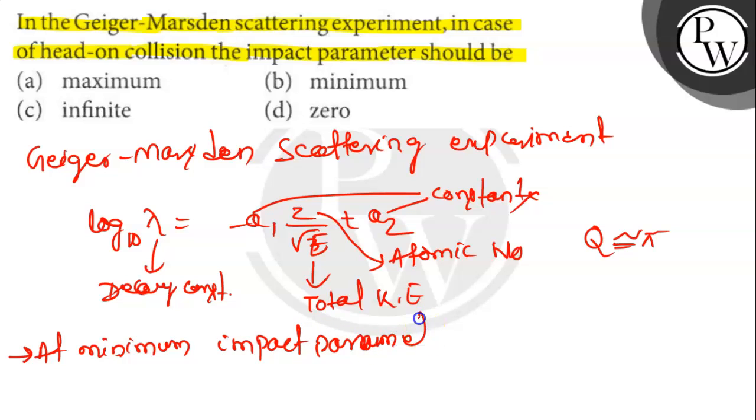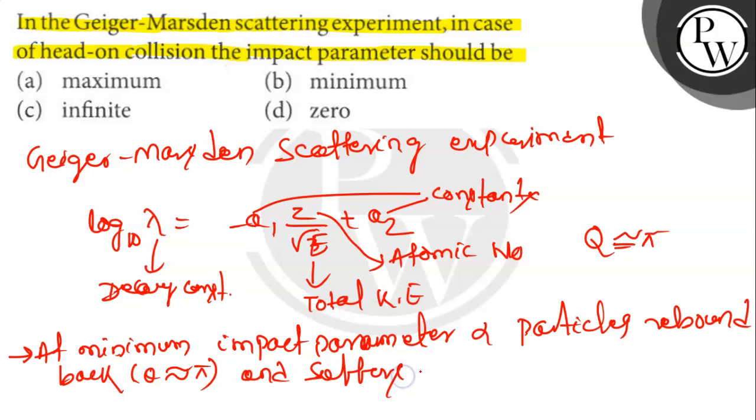alpha particles rebound back with theta approximately pi, equivalent to pi, and therefore large scattering occurs.